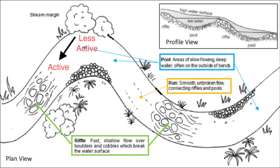As you can see in this illustration, there are three basic components that make up your standard river stretches. The first being a riffle — riffles are areas of fast shallow water flowing over boulders and rocks, and they sometimes break the surface.